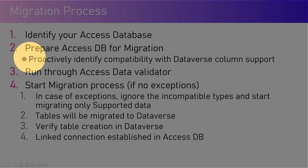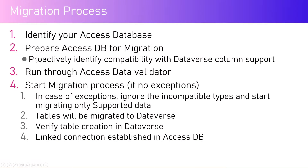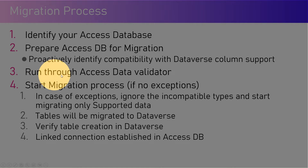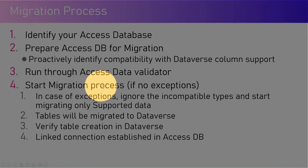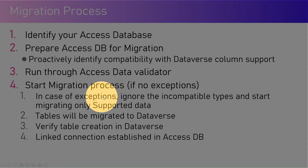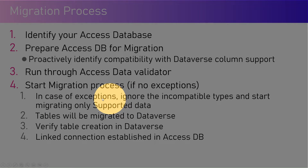The steps are: proactively check which columns are supported, then run through the Access data validator, then start the migration process. Once the validator validates with no exceptions, you are good to go. In case of exceptions, you can either ignore the incompatible types and migrate only the supported data, or you can completely stop the migration process.